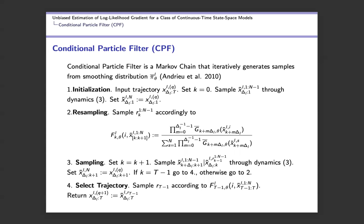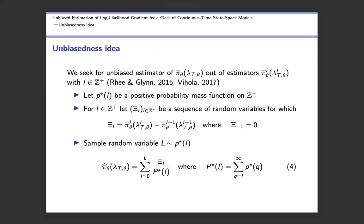The conditional particle filter is a Gibbs sampler that iteratively generates samples from a smoothing distribution. Each iteration takes an input trajectory from the previous step, samples N-1 trajectories up to the unit time following the underlying dynamics, and fixes the N-th one equal to the input trajectory. Weights are assigned, N-1 are resampled, propagated to the next observation time, and finally one trajectory is sampled as the next output — the new sample of the smoothing distribution.